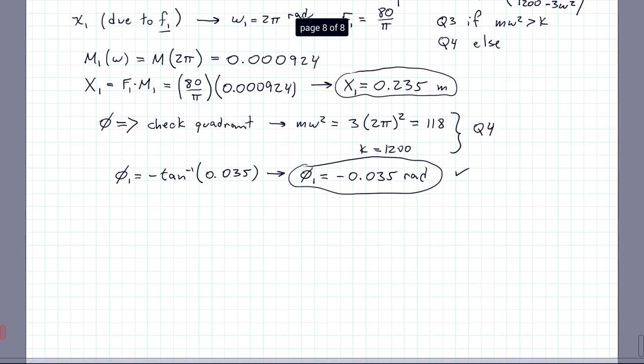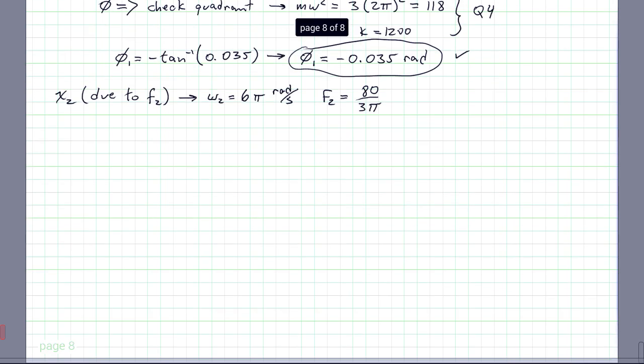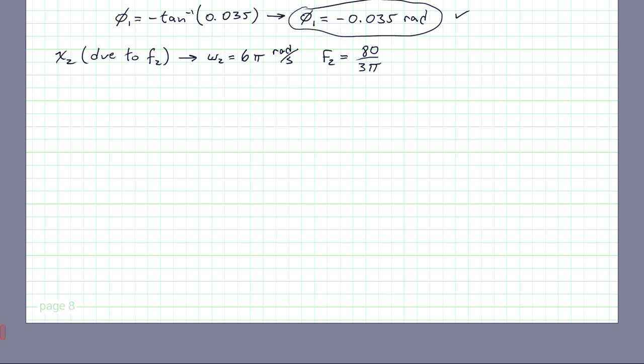Next up, we'll do x2, which is due to F2. In this case, our ω2 is 6π radians per second. Our second forcing amplitude is 80/3π, presumably newtons. Alright, let's go fast here. So the second magnitude ratio, so M2(ω) is the magnitude ratio evaluated at 6π. Plug in the magnitude ratio at that value and you will get 0.0057.